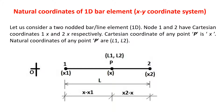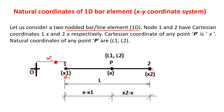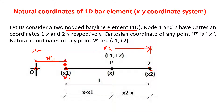To derive these natural coordinates, consider one two-noded bar element as shown in the figure. There are two nodes, node number 1 and node number 2, so it is also called a line element or bar element. The Cartesian coordinate of node number 1 is X1 and Cartesian coordinate of node number 2 is X2, both measured from origin O.